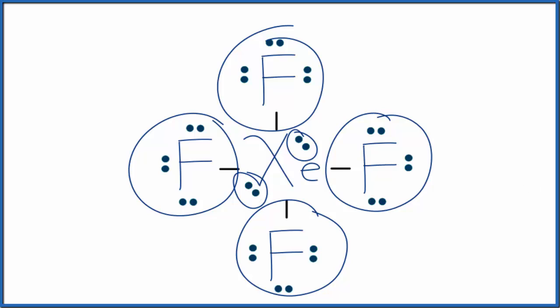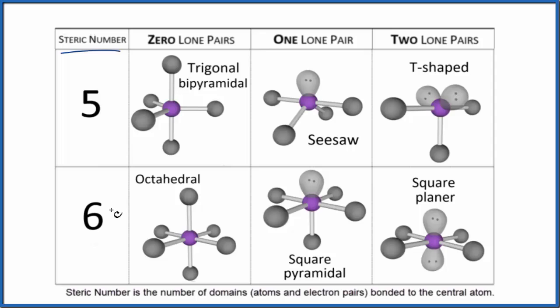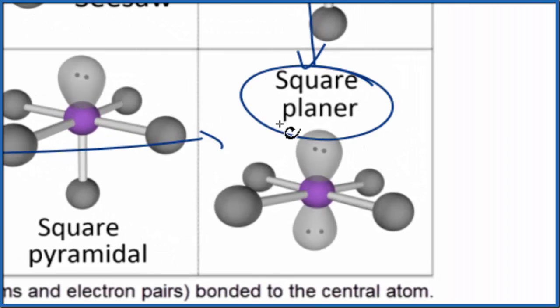We go to our table here, so we set our steric number—that's six—and we had those two lone pairs, so we go down and over and it's that square planar molecular geometry. The bond angles here will be about 90 degrees, and then if we look at this bond angle kind of straight down the middle, that would be 180.